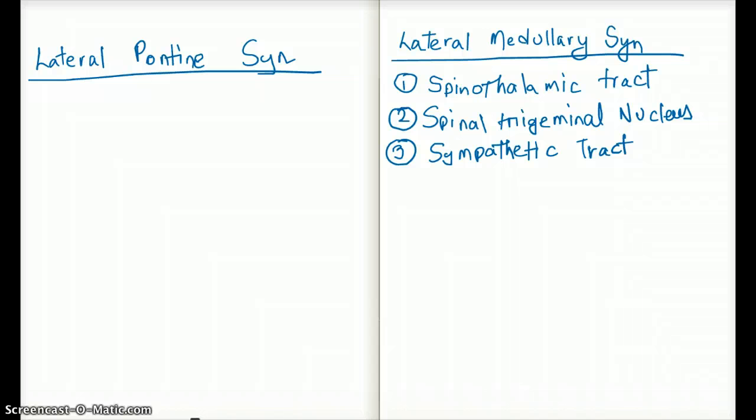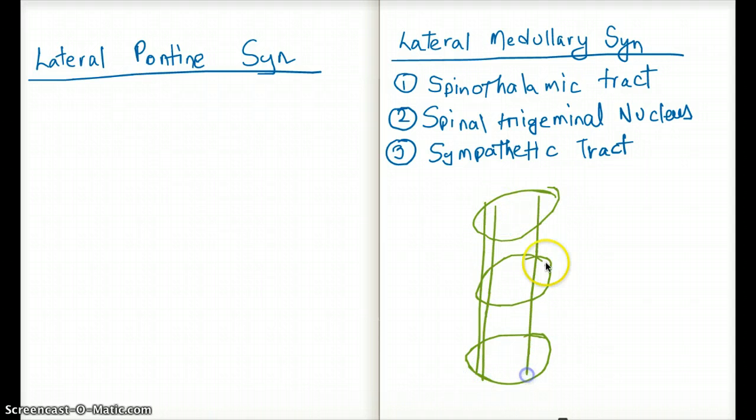The reason for that is because first there is a midbrain, then there is a pons, and then there is a medulla. So imagine this is the midbrain, this is the pons, and this is the medulla. The structures tend to run in the same direction in the midbrain and pons.